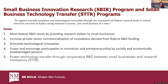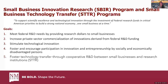The third goal is stimulating technological innovation — the government recognizes that one of the biggest gaps for small businesses and early-stage technologies is getting funding to explore if those innovations are even commercializable. Number four is to foster participation in innovation and entrepreneurship by socially and economically disadvantaged persons — we do a lot of outreach in rural communities in New Mexico and want to make these programs available to everybody, including first-time applicants. Fifth is to foster technology transfer through cooperative R&D between small businesses and research institutions, which is specific to STTR.